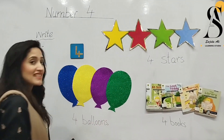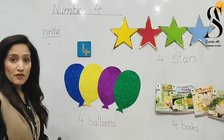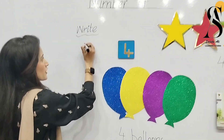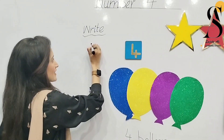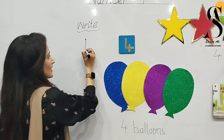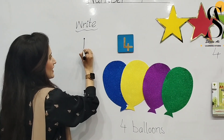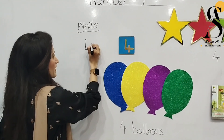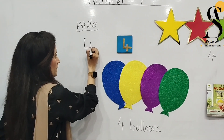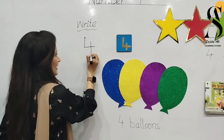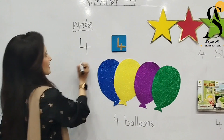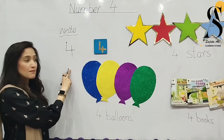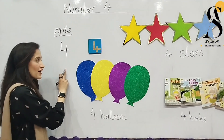So let's learn the number formation of four first. We are going to make a standing line, then a sleeping line, and then from here you are going to make a standing line again. This is number four. Which number is this? Number four.